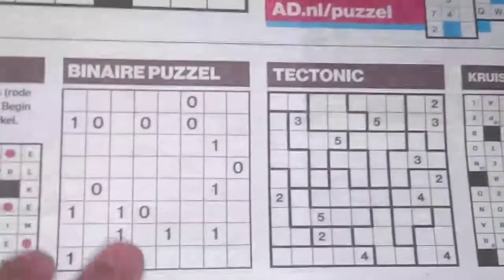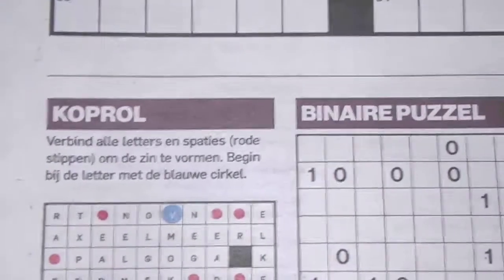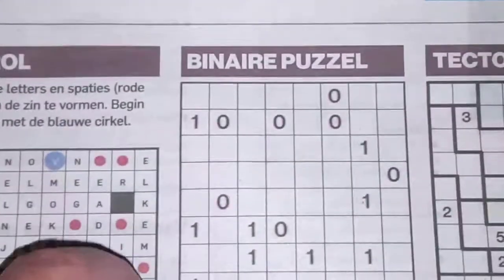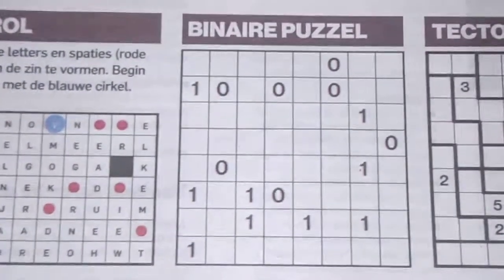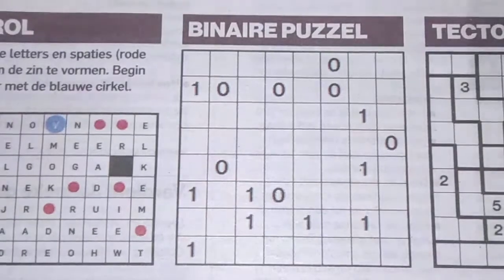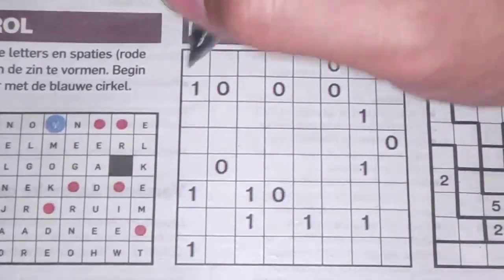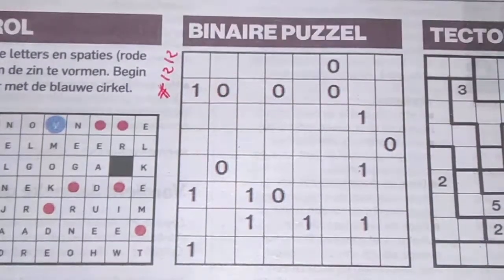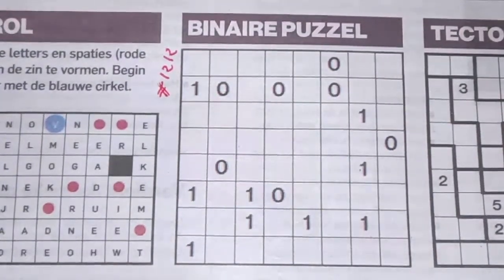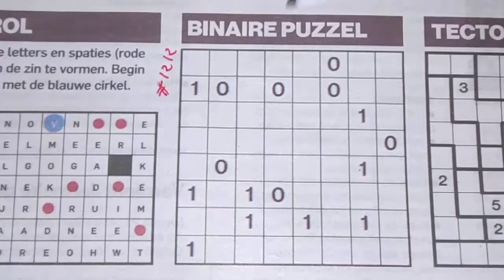We have two Sudokus left, a binary puzzle and a tectonic. Number four — the fourth puzzle is a binary puzzle. But before I start, this will be number 1212. Yes, 1212. And what kind of binary puzzle is this?